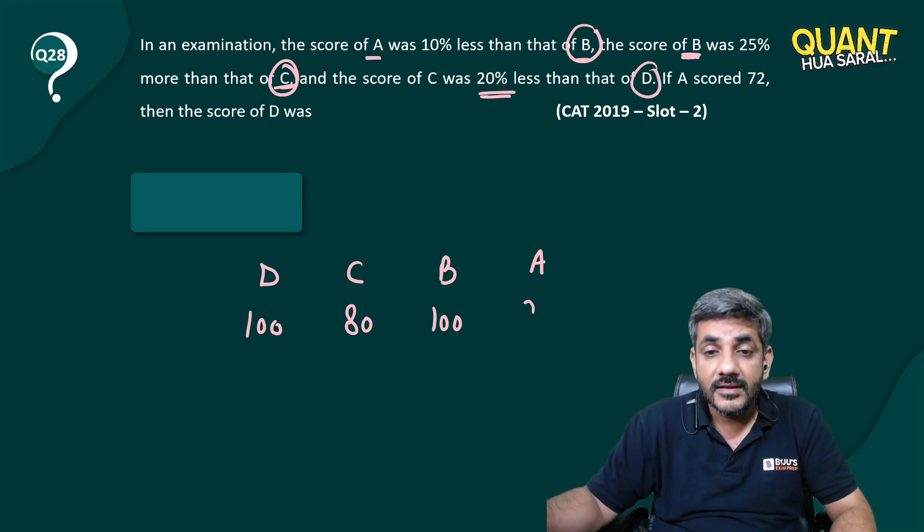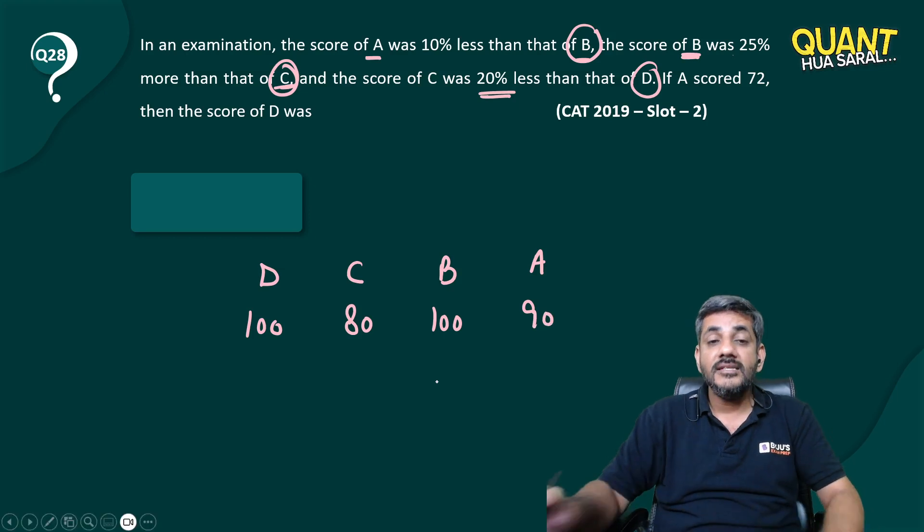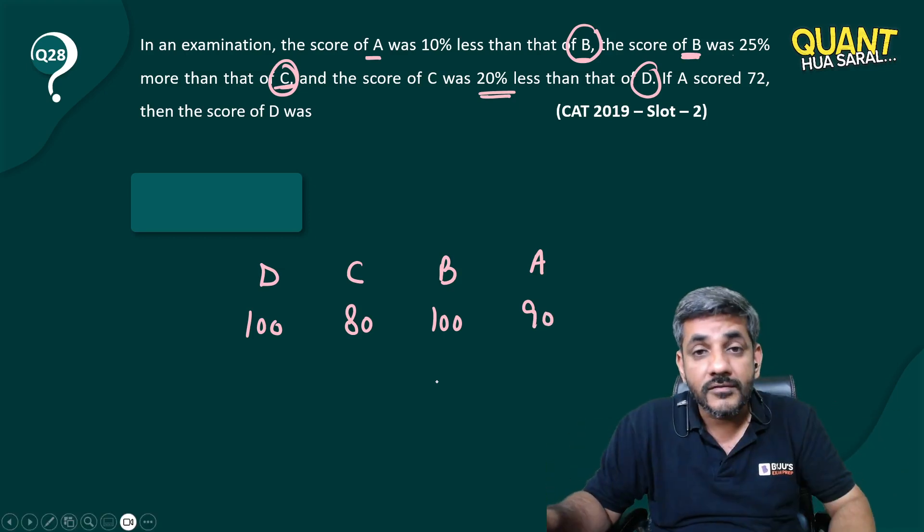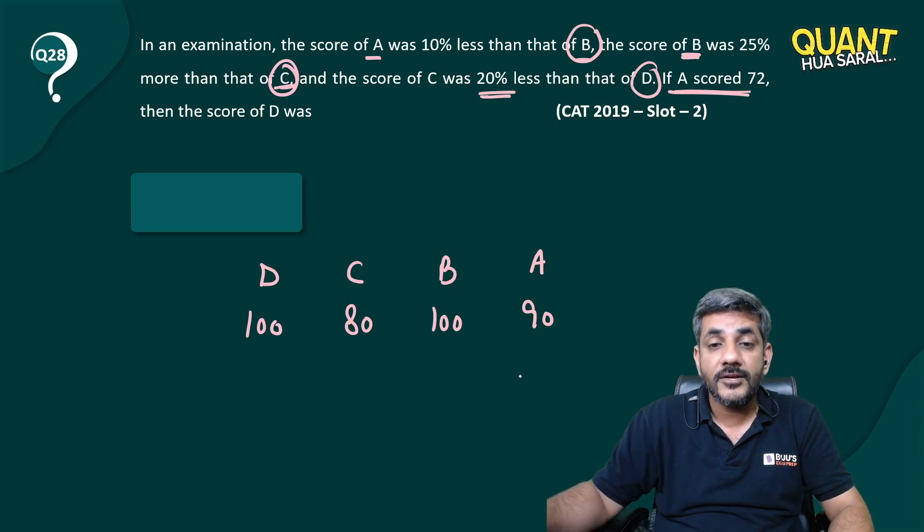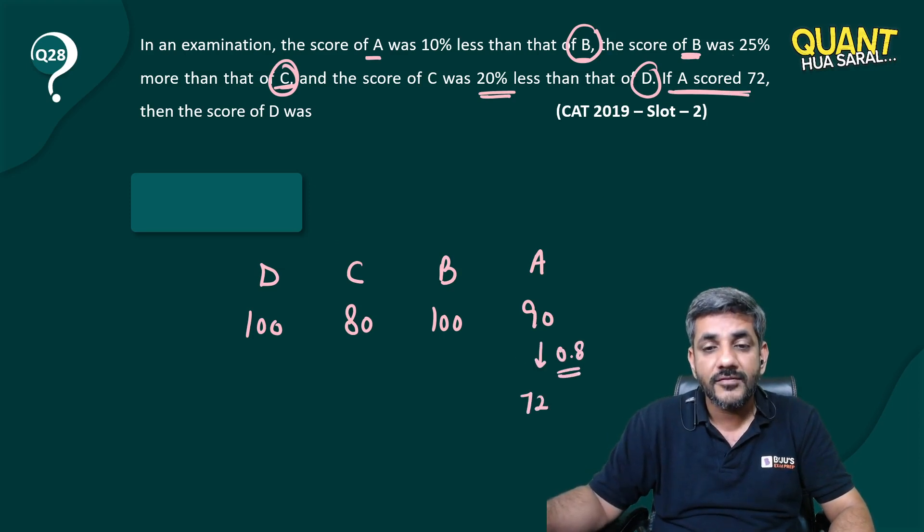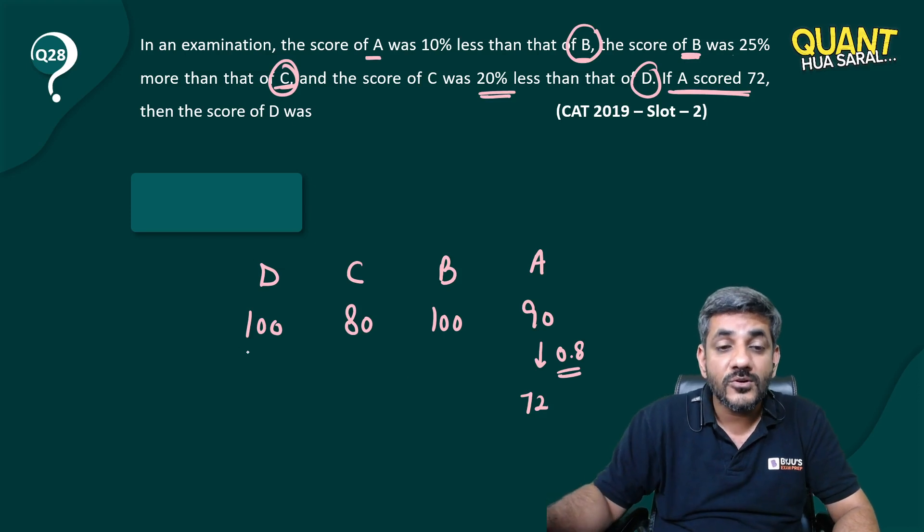So I can say these are the ratios of their scores. If A scored 72, that means 0.8 times 90. Then what was the score of D? It would also be 0.8 times 100, so 80 is the correct answer.